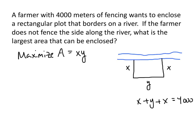And that means that if we solve this equation for y by subtracting 2x from both sides, we get that y equals 4,000 minus 2x.